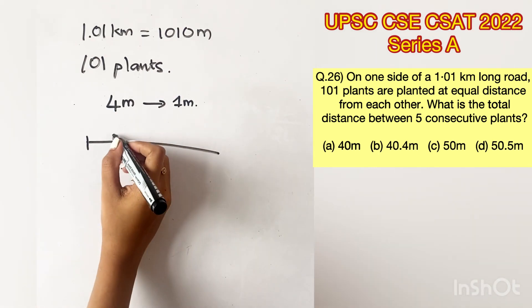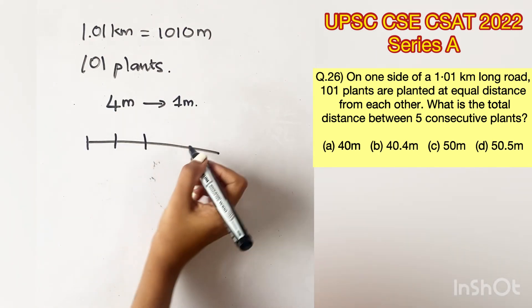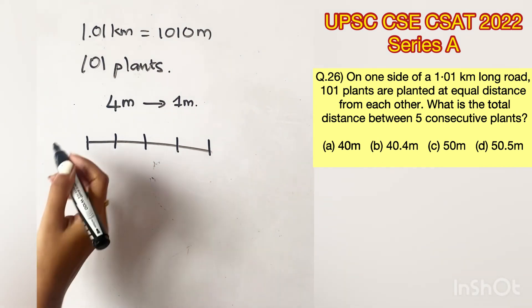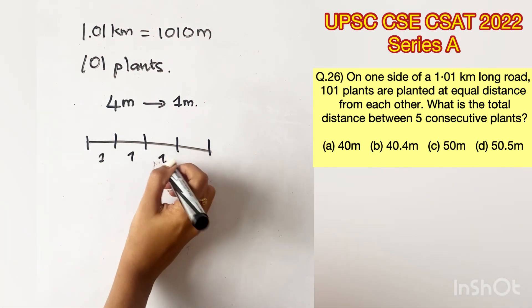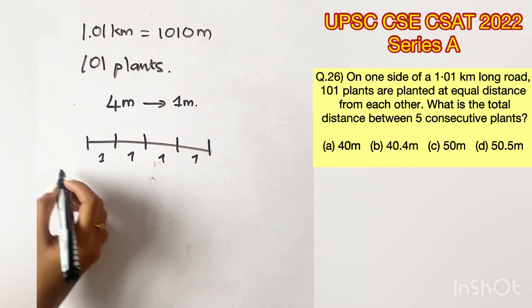We will have to place plants here, here, here, here and here. So there is an equal distance of 1 m adding up to 4 m. Now how many plants are there?